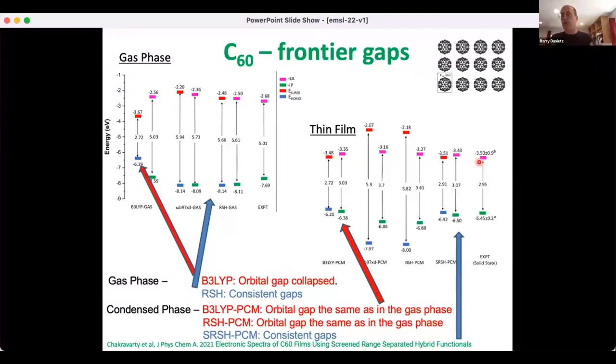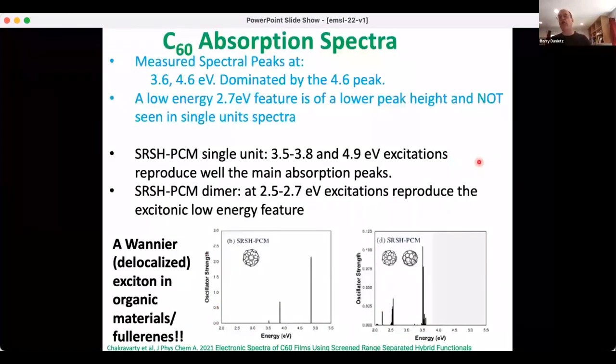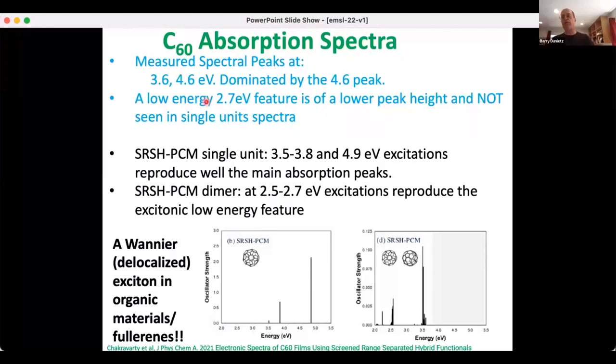Looking into the excited states, we have two dominant peaks in the measured spectra at around 3.6 and 4.6 electron volts. Now, as we take the system from being a single C60 to clusters or thin films, we still find these two dominant peaks, but there is this emerging feature that is red-shifted, a lower but still significant peak at around 2.7 electron volts.